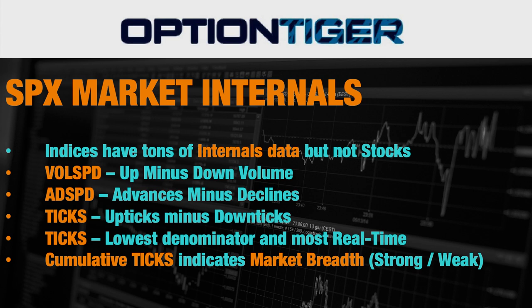There's a third one called the ticks. The ticks is simply uptick minus downtick. Every millisecond, all 500 stocks are either ticking up or ticking down. The ticks calculates the number of upticks and downticks and gives you a continuous reading when the markets are open. In that sense, the ticks is the rawest data coming from the market because it is computing things in real time on a tick-by-tick basis.